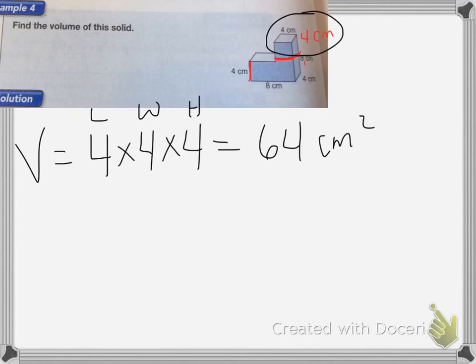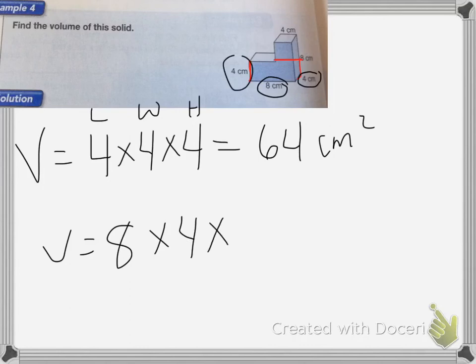Now for the rectangular prism, again I'm going to do length times width times height. So my length is 8 centimeters, my width is 4 centimeters, and my height is also 4 centimeters. If I multiply that together, I end up with 128 centimeters cubed.